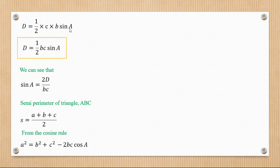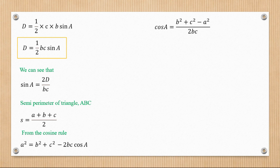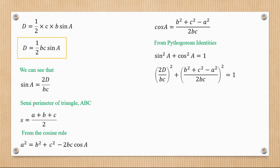If we had focused on sine of capital B, we would use the cosine rule with cos(B); similarly for sine of capital C we would use the form with cos(C). For this example we use cos(A). Making cos(A) the subject: cos(A) = (b² + c² − a²) / 2bc. From the Pythagorean identity, sin²(A) + cos²(A) = 1. Substituting the expressions for sin(A) and cos(A), we proceed with the derivation.